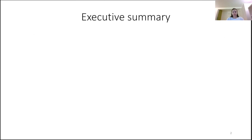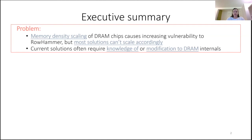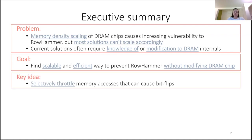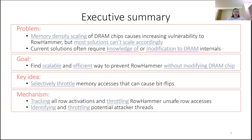Let me begin with a short executive summary. Due to memory density scaling, current and future DRAM chips are more vulnerable to rowhammer, but unfortunately present solutions cannot scale accordingly. They also often require knowledge of or modification to DRAM internals. The goal of this paper is to find a scalable and efficient alternative to prevent rowhammer without knowing anything about DRAM internals or changing anything about it. The key idea is to selectively throttle memory accesses that can cause bit flips — the rowhammer-like memory accesses — by tracking the row activation rate of all rows.